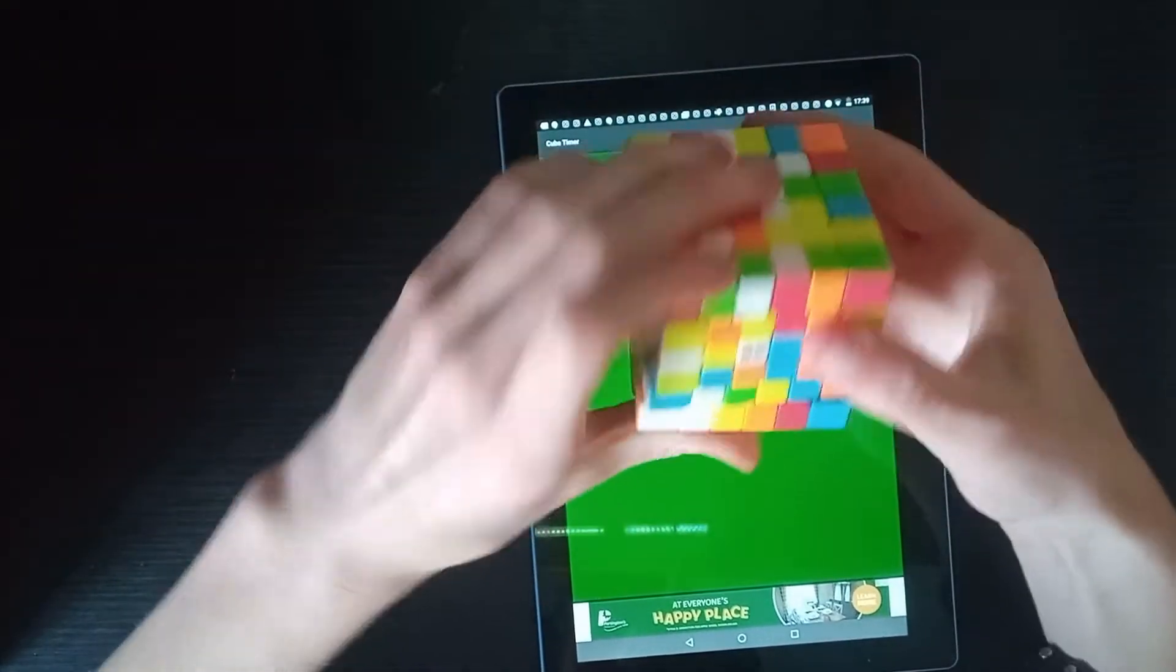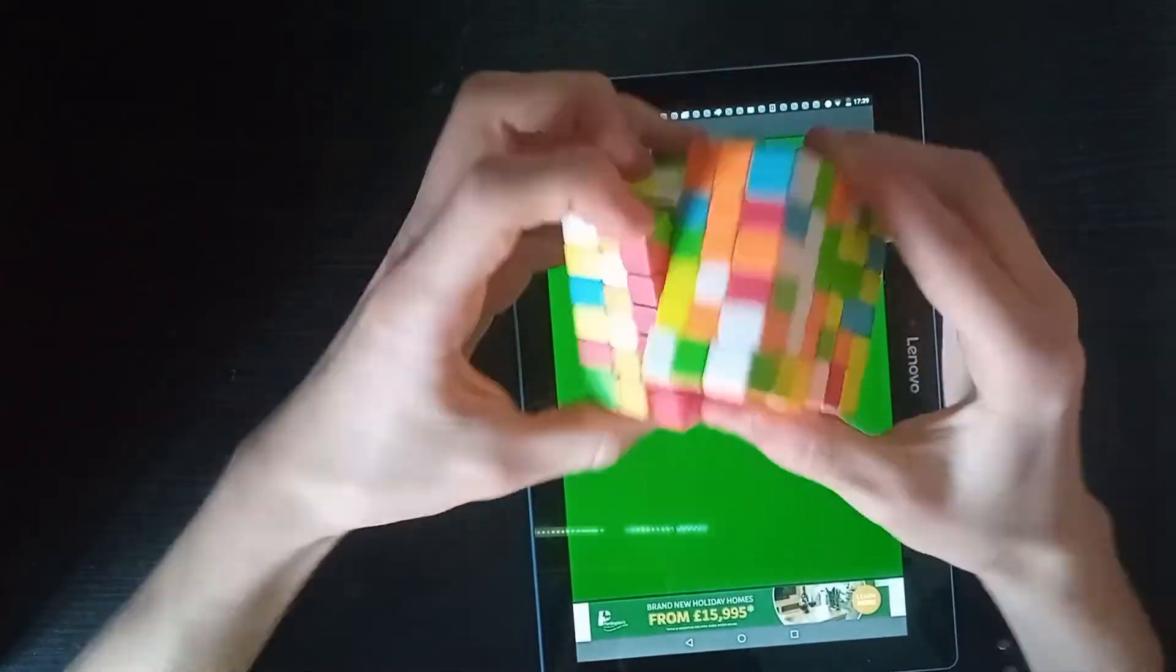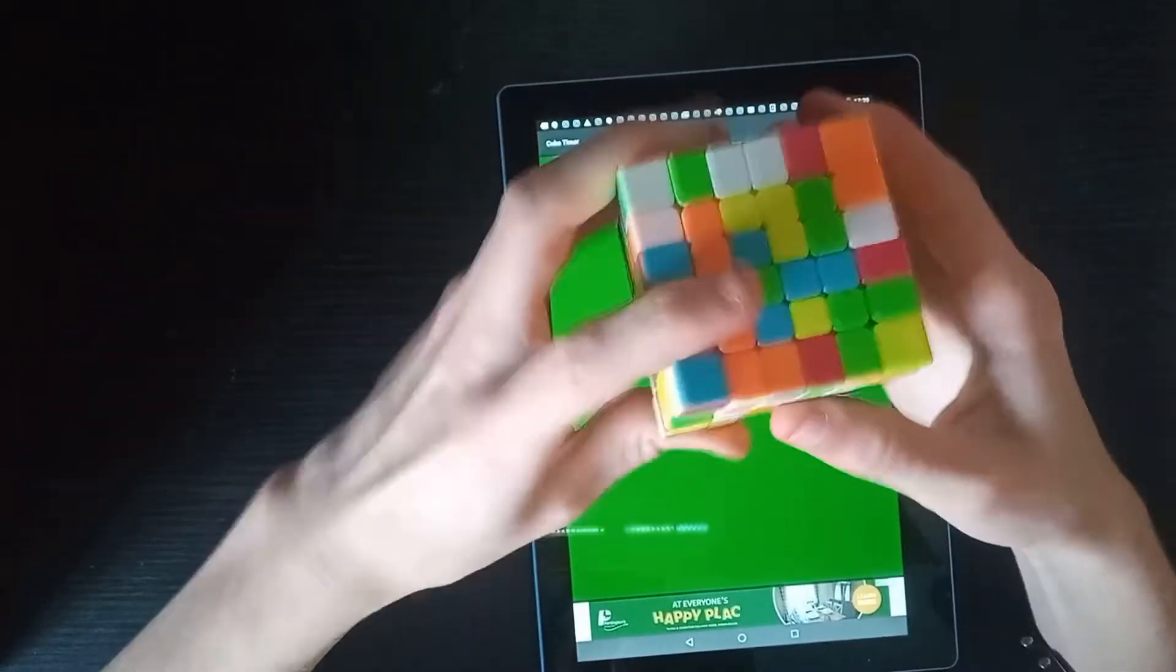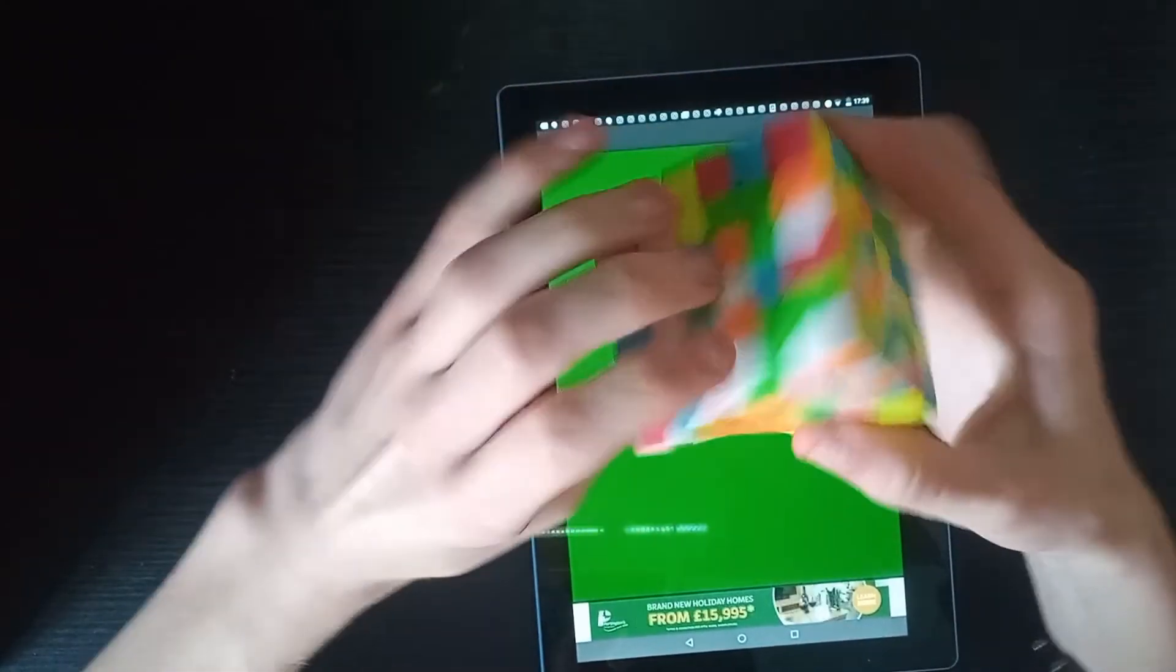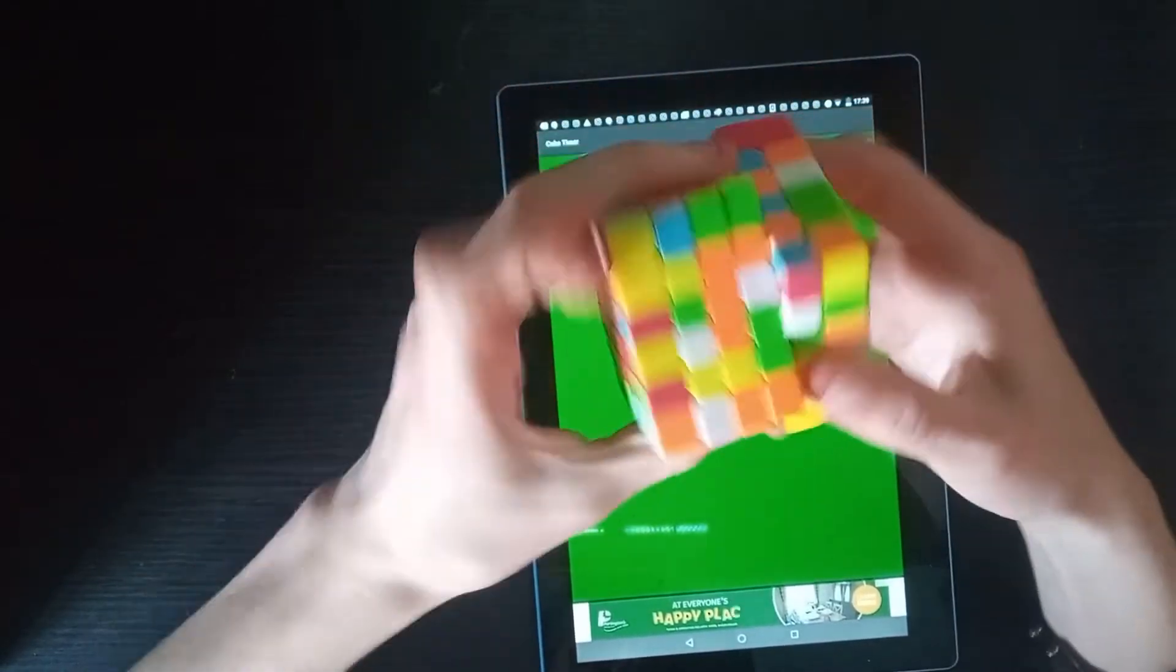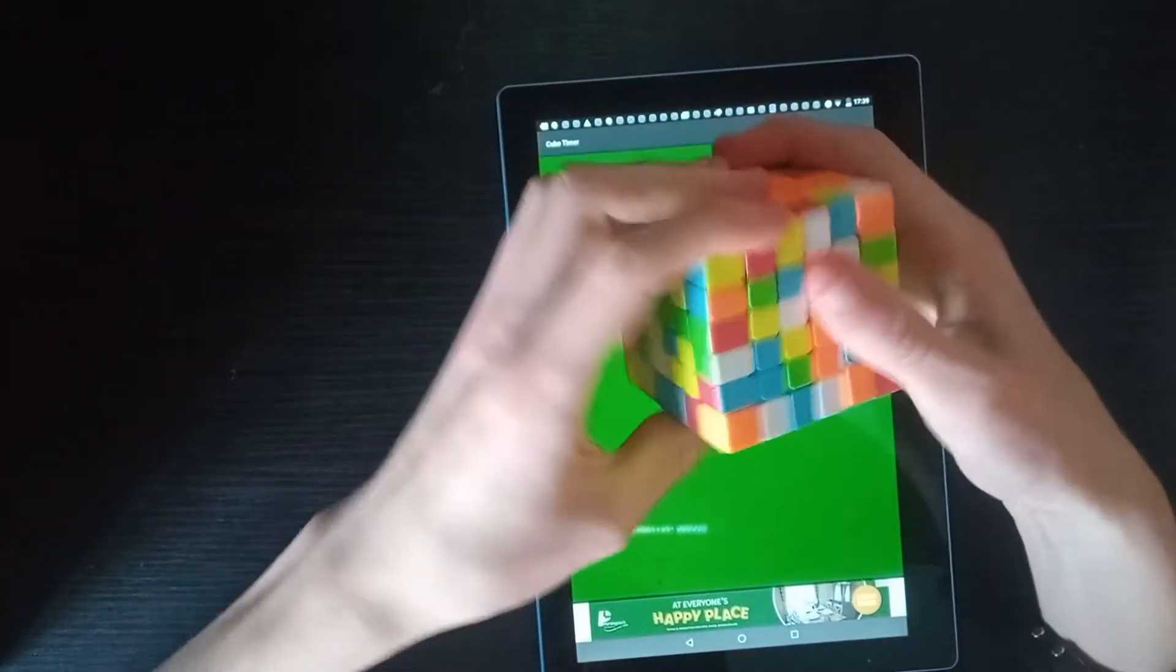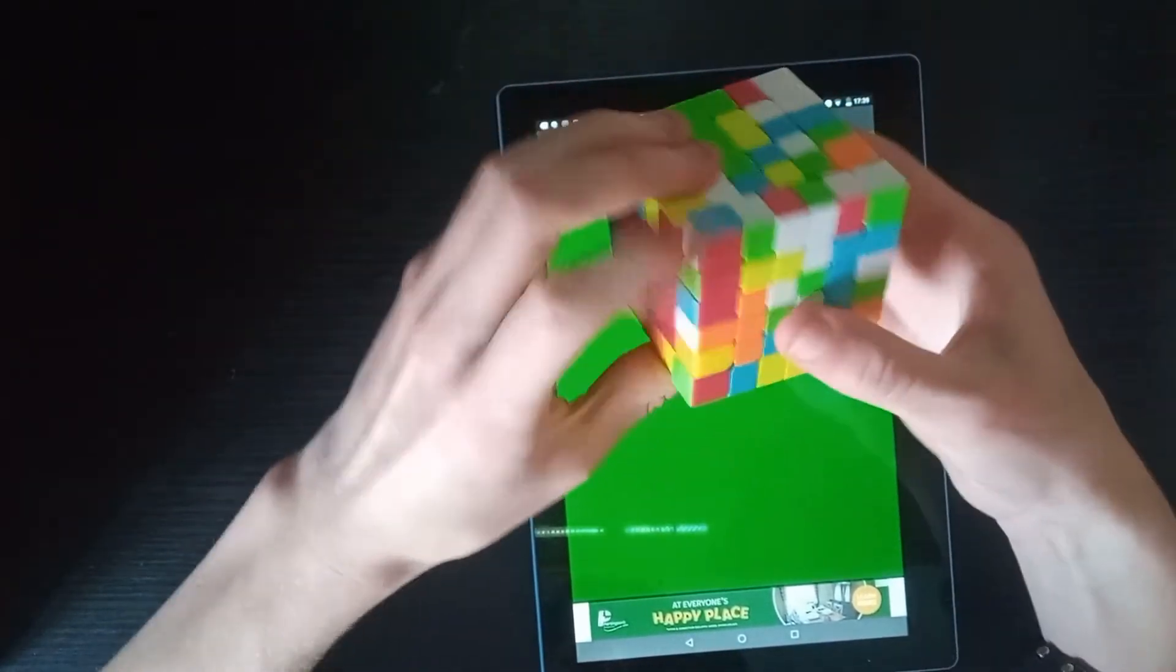As for just 6x6s and other big cubes in general, I get the feeling that YJ have betted on the idea that actually there won't be much improvement in cubing hardware, considering that they first released their MGC 5x5 and 6x6 back in November 2019.